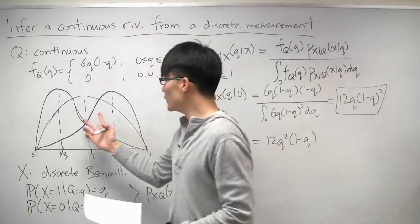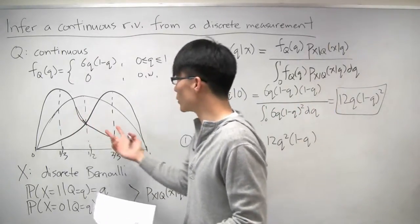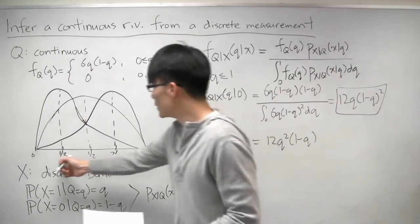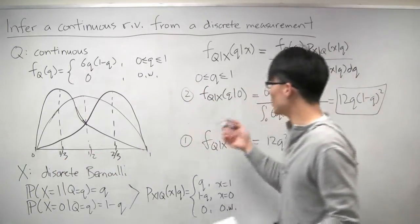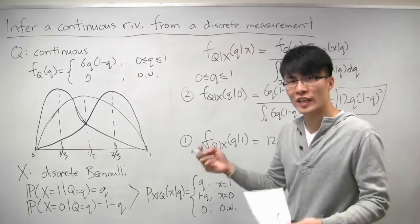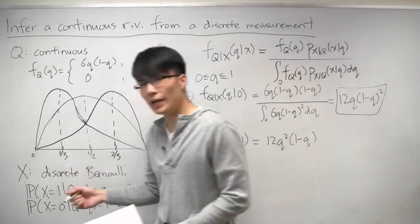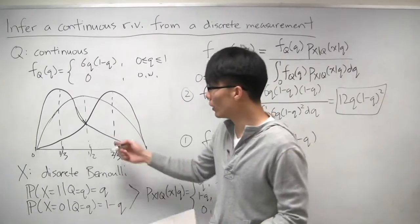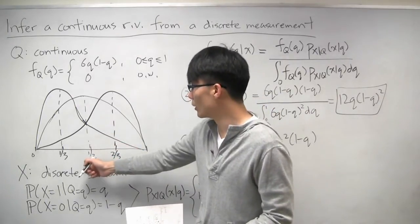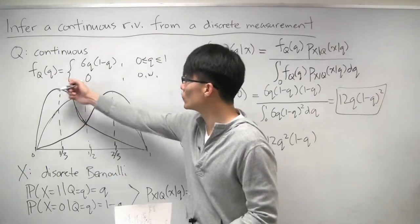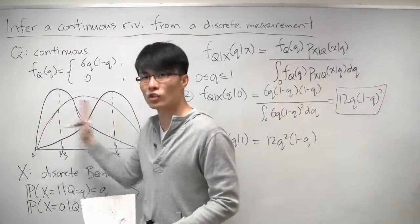And so you notice, first of all, that these are symmetric. There's some symmetry going on. And the interpretation in this case is that because you observed 0, which corresponds to observing tails, that gives you evidence that the bias of the coin is relatively low, or the probability of getting heads with this coin is relatively low, which pushes your belief about q towards the smaller values.